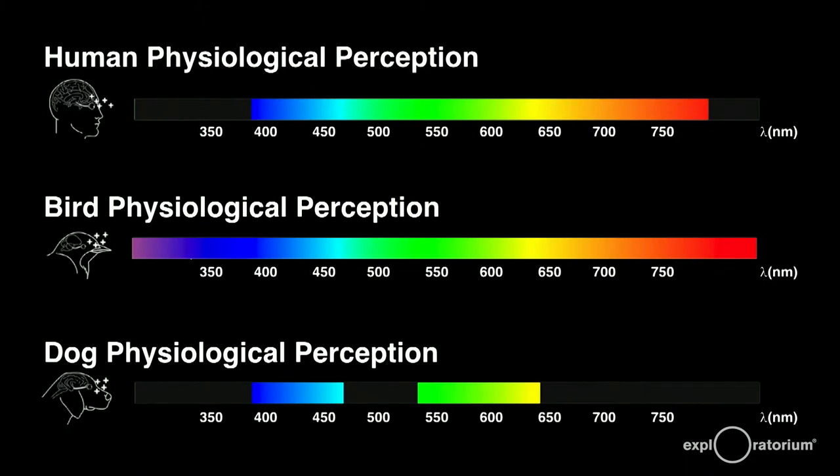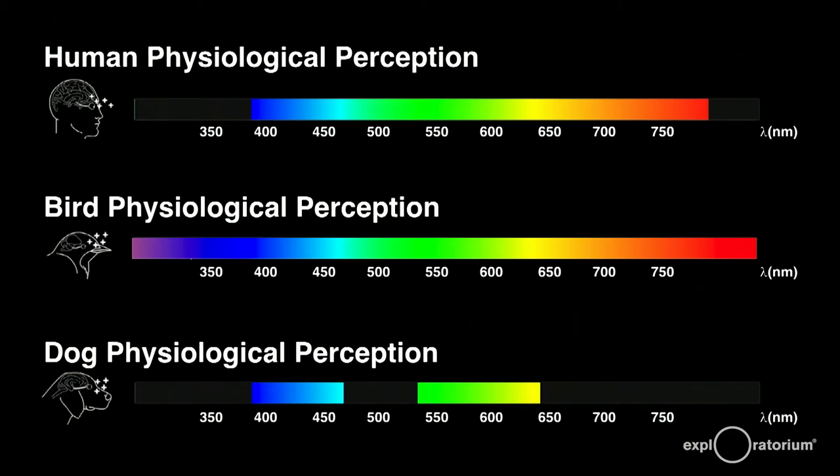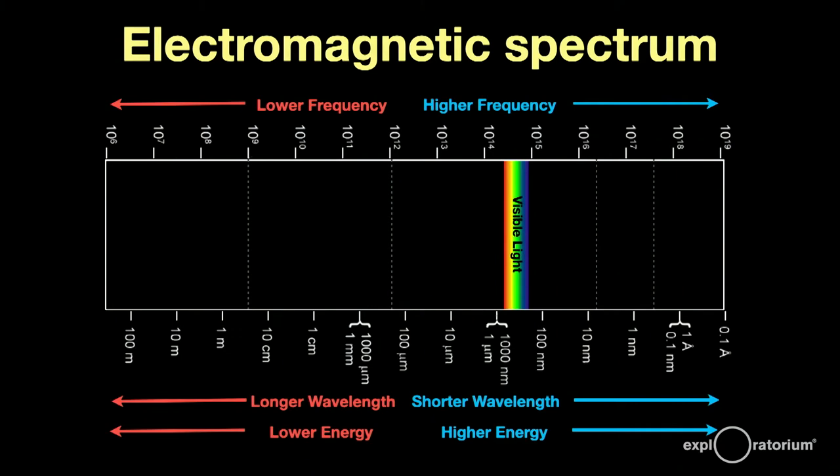Just because our human perception only covers red to violet, that doesn't mean that other species perceive the same thing. Birds have a somewhat wider range, and dogs substantially less range. We may only see one octave, but the piano is very large.